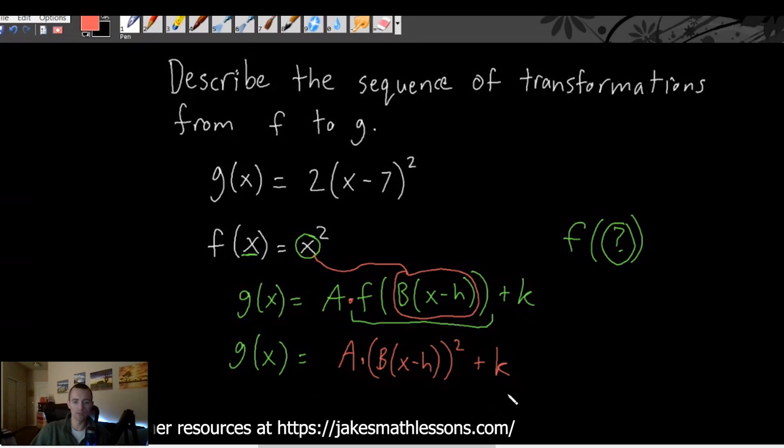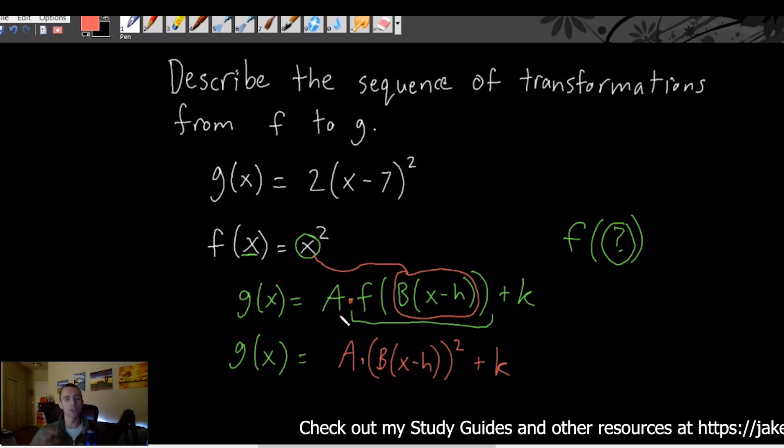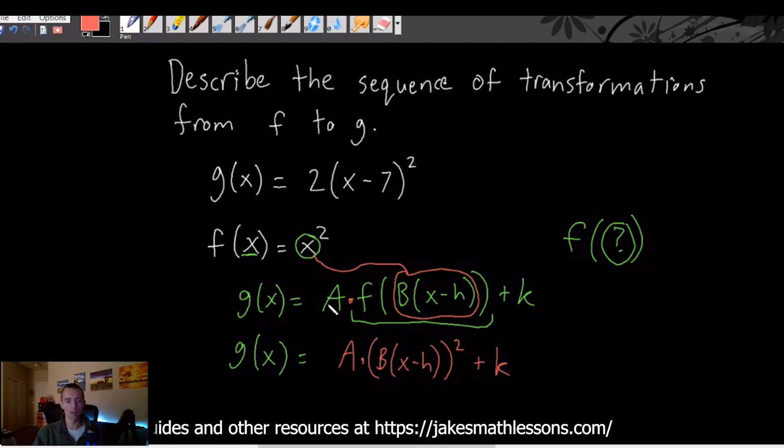So now that's all being squared and then we're just going to have A times that and then plus k. So this is the general template for what a quadratic function - whenever you have just a parabola comparing that to your parent function x² - this is the specified template for quadratic functions.